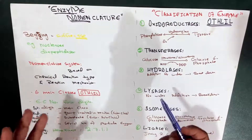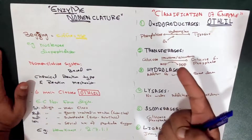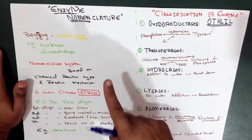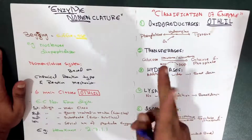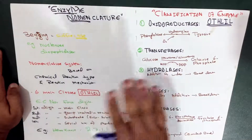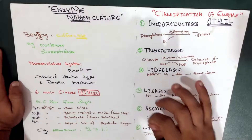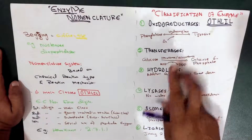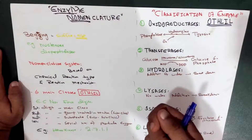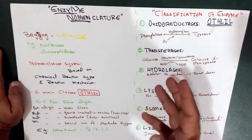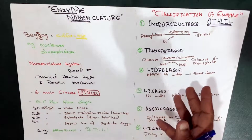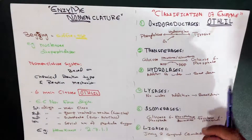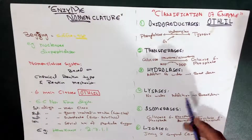We have a few examples regarding reaction-based naming: dehydrogenase and proteases. Remember that dehydrogenase and proteases were not named after the substrate — they were named after the particular reaction they catalyze.